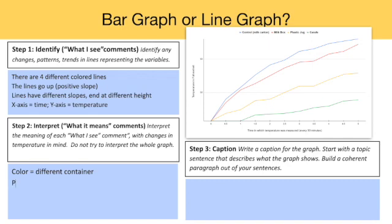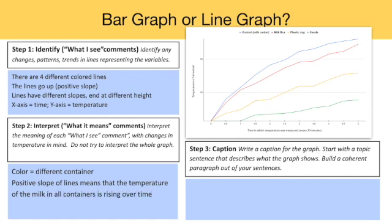More complex interpretation concerns what it means that all of the lines are going up. What does it mean that they have a positive slope? This means that the temperature of the milk in all the containers is rising over time. None of the containers keeps the temperature totally constant or lowers it. The most any container can do is slow down the process of heating up.